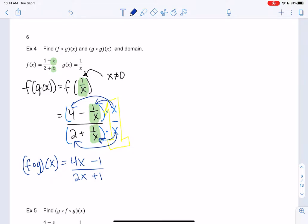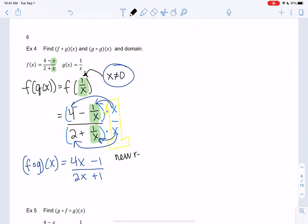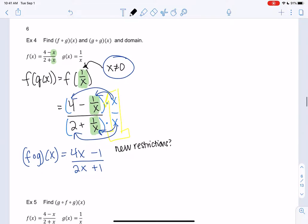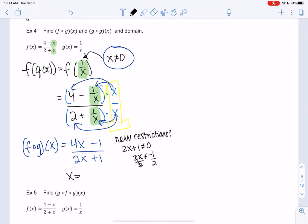x can't be 0 from step 1. And then are there any new restrictions? So 0 technically works in this final function. But again, because we used 1 over x in between, we can't use 0. So it can't be 0. And then also 2x plus 1 can't be 0. So what's that? 2x can't be negative 1 half. So my domain is just x can't be 0, negative 1 half. And that is my composite function.